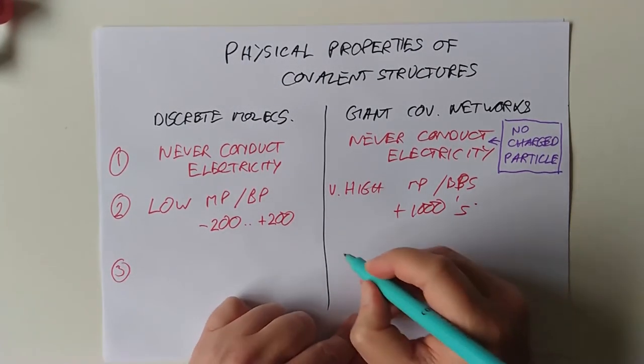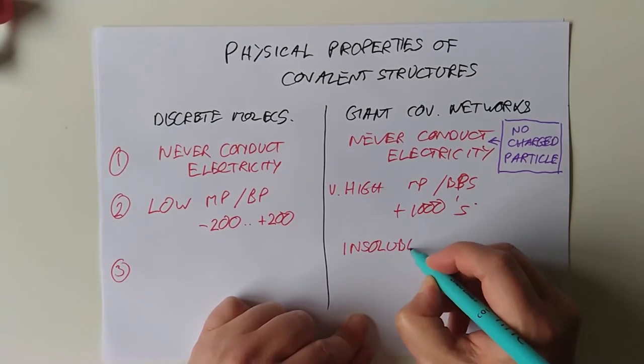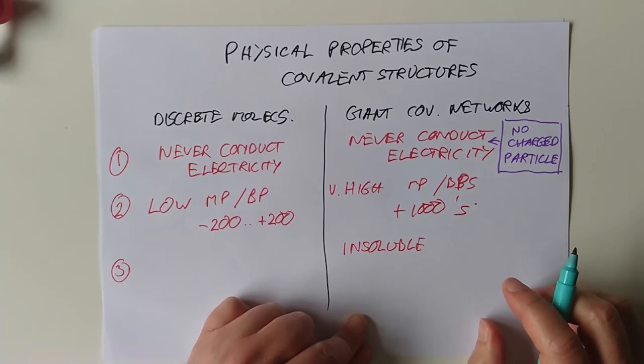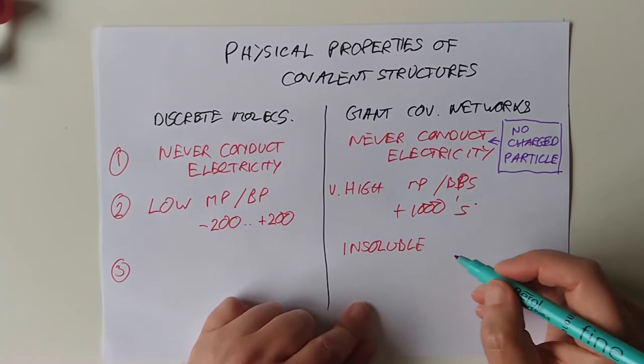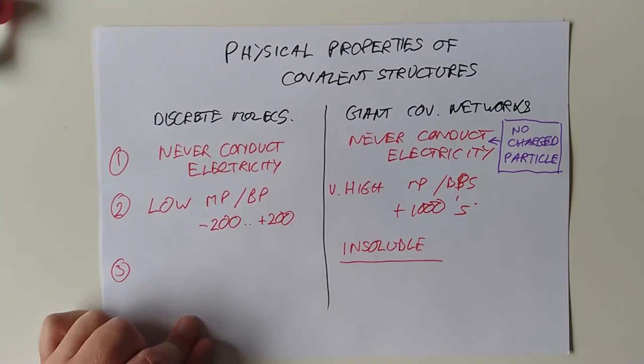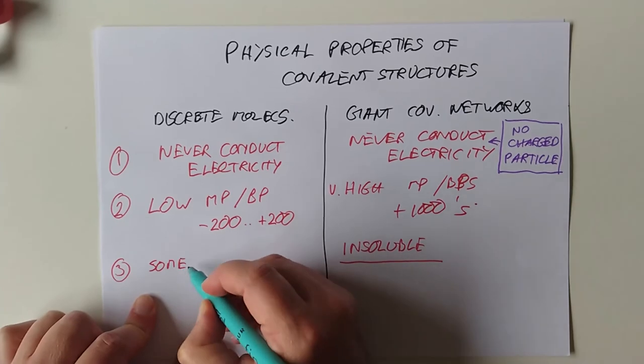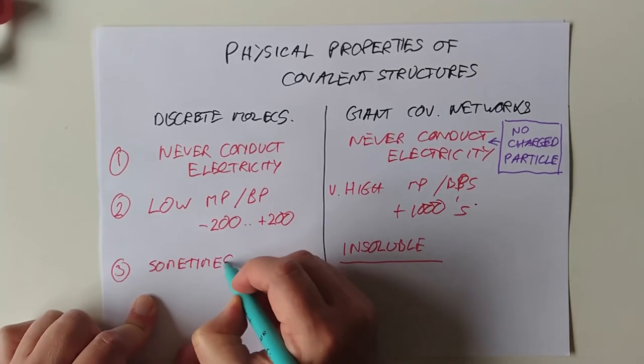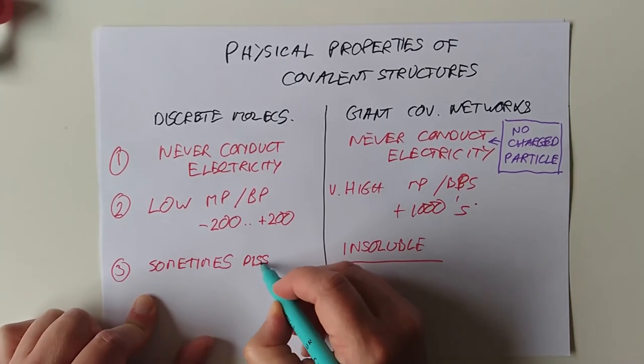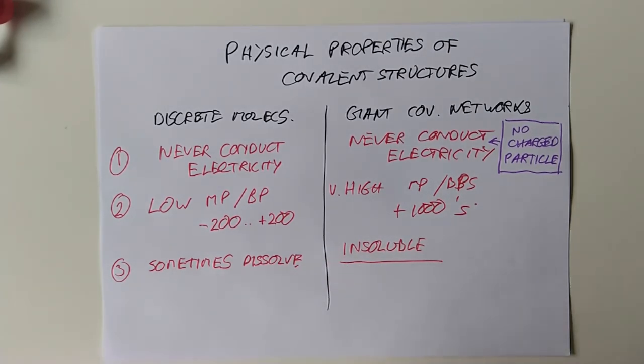The third thing that they wanted to mention is dissolving. So giant covalent networks basically are insoluble. That's a nice one for sand. You really wouldn't want your sand to dissolve in the water. You're going to lose your beaches really quickly that way. So insoluble. Discrete molecules can sometimes dissolve. Solubility is a wee bit complex. So I can't see the SQA asking you that much at the time.